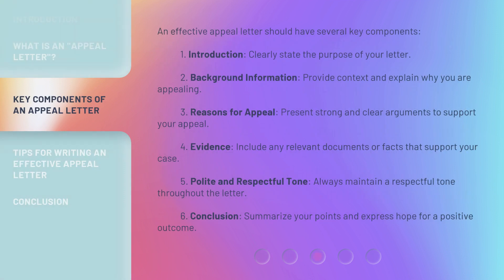An effective appeal letter should have several key components. 1. Introduction: clearly state the purpose of your letter. 2. Background information: provide context and explain why you are appealing. 3. Reasons for appeal: present strong and clear arguments to support your appeal. 4. Evidence: include any relevant documents or facts that support your case. 5. Polite and respectful tone: always maintain a respectful tone throughout the letter. 6. Conclusion: summarize your points and express hope for a positive outcome.